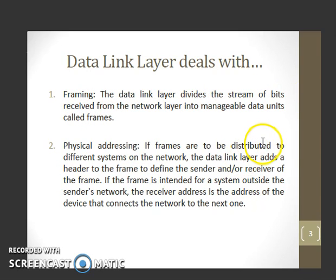If the frames are to be distributed to different systems on the network, the data link layer adds a header to the frame to define the sender or receiver of the frame. If the frame is intended for a system outside the sender's network, the receiver address is the address of the device that connects the network to the next one.